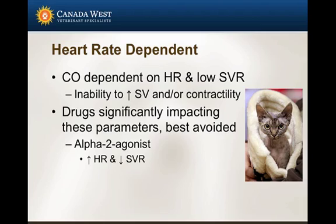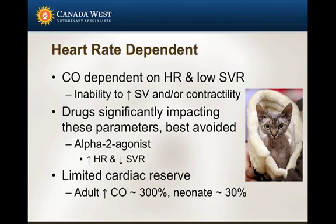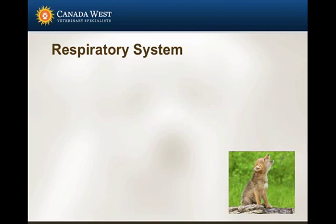Alpha-2 agonists are drugs we would basically avoid in these patients unless there is an absolutely good reason, because they cause reductions in heart rate and increases in systemic vascular resistance. These patients have limited cardiac reserve: an adult patient can increase cardiac output by about 300 percent, whereas a neonate is only about 30 percent. A pediatric patient would be somewhere in between those two extremes.